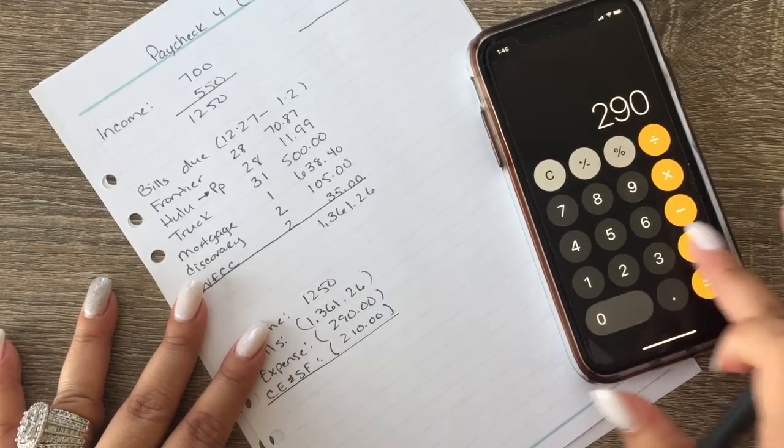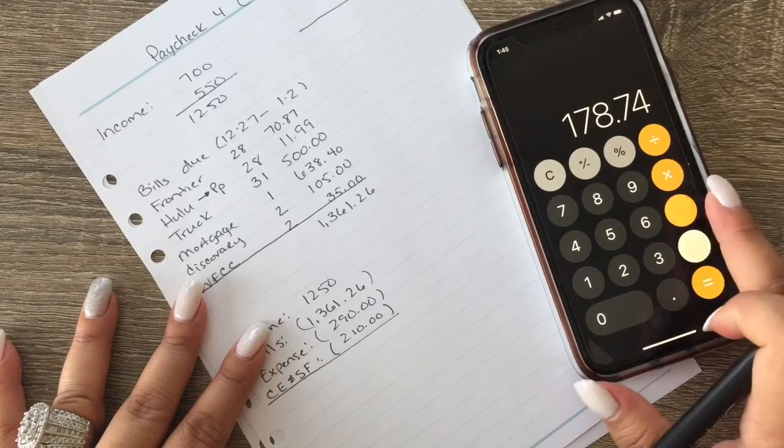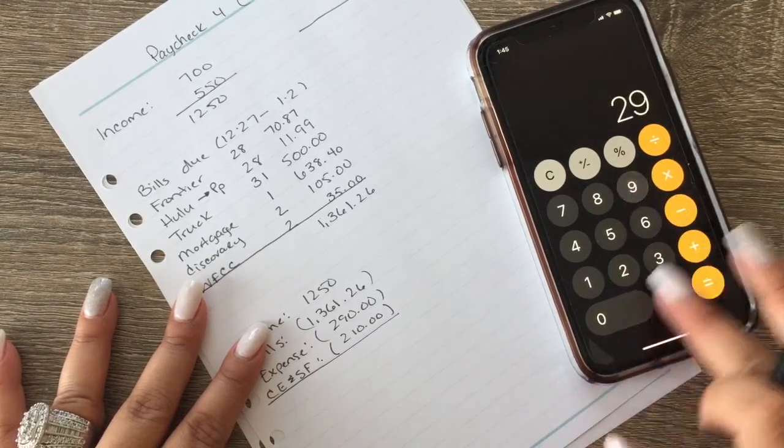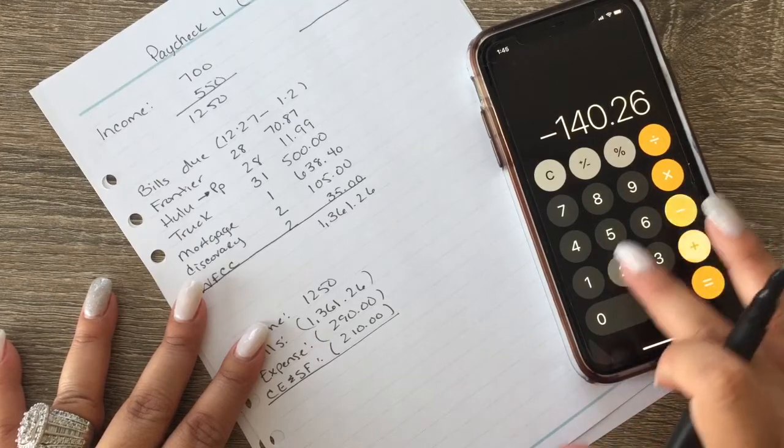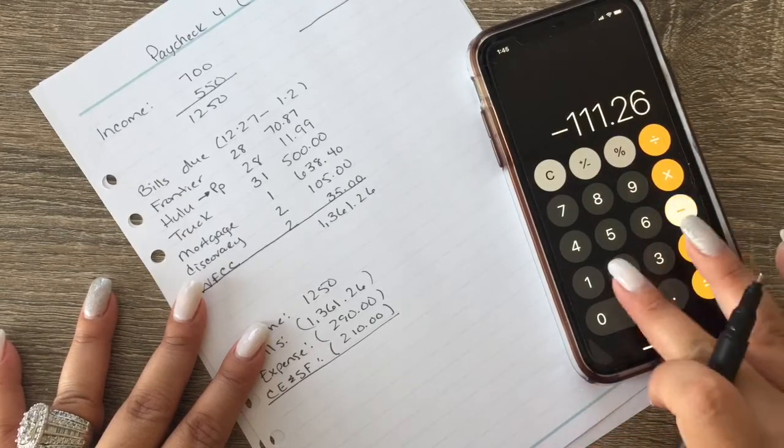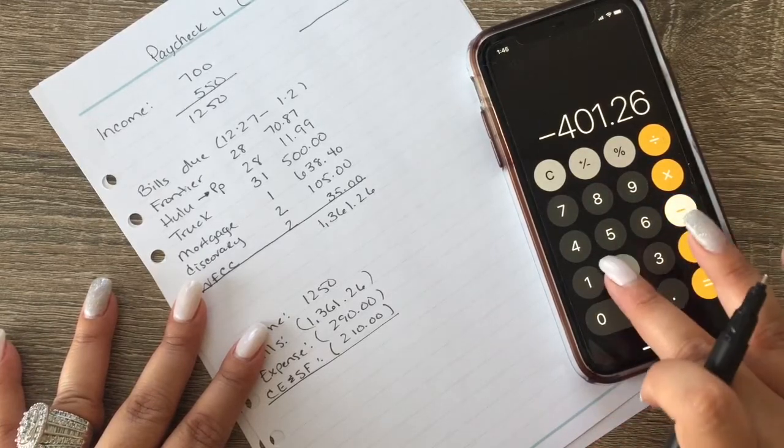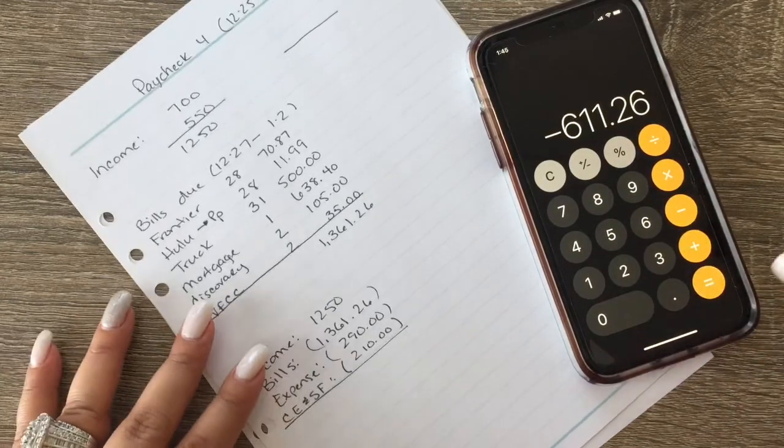So $1250 minus $1361.26 minus $290 minus $210, so we're looking at $611.26 way over budget.